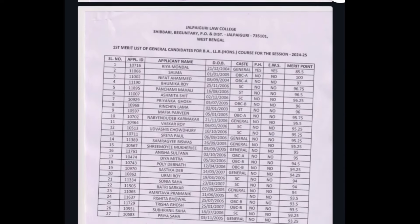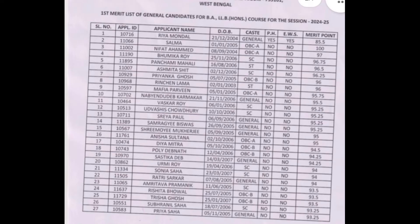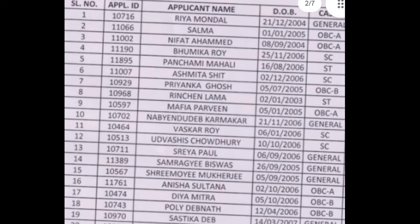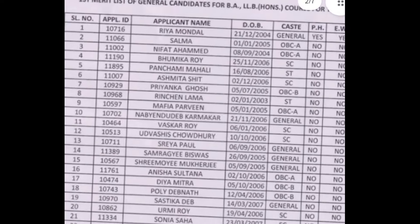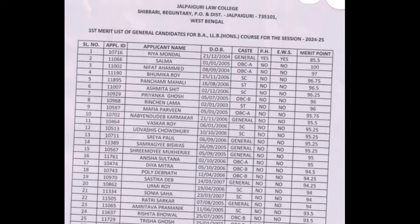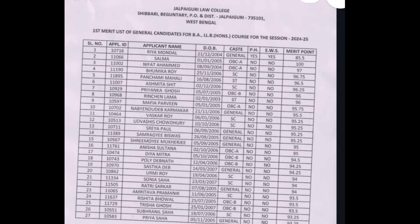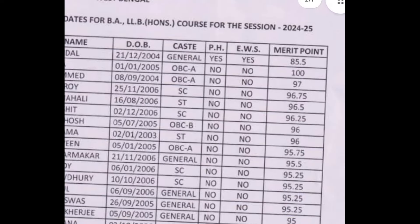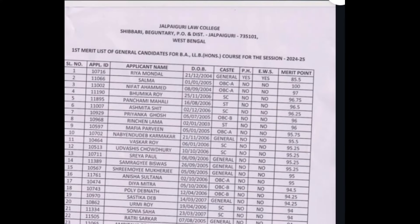We will see the honours course. In this list, we can see students from the EWS category as candidates. The PH category shows 8.5 marks for that candidate position.